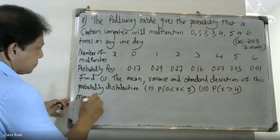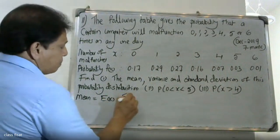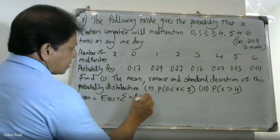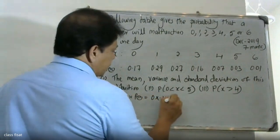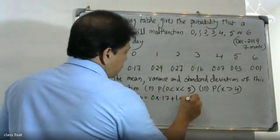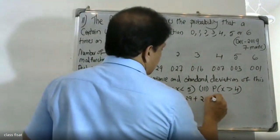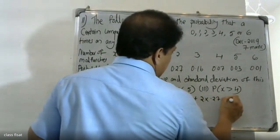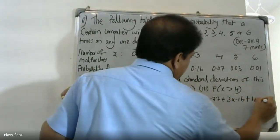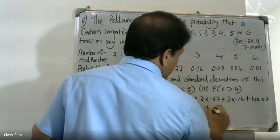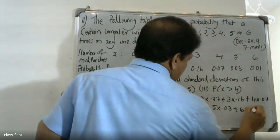The expectation of x is E(X) = Σ x·f(x). So: 0 into 0.17 plus 1 into 0.29 plus 2 into 0.27 plus 3 into 0.16 plus 4 into 0.07 plus 5 into 0.03 plus 6 into 0.01.